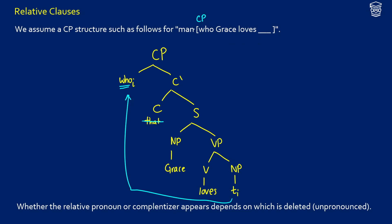We're also going to have a C, which is going to be filled with the complementizer "that." Now if we have a WH pronoun, the "that" is not going to be pronounced, but if we say "that," then the WH pronoun is not going to be pronounced, and we just symbolize that with a line through it.